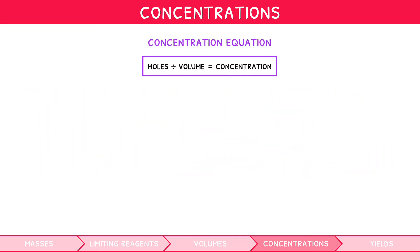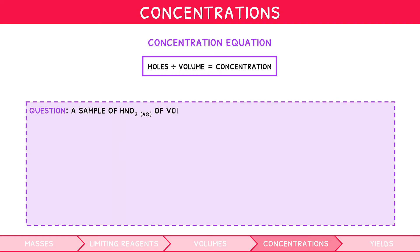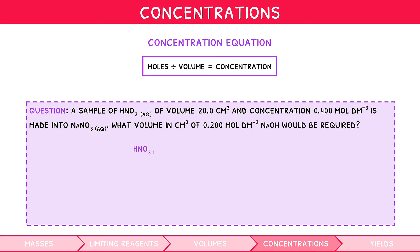Let's now look at a slightly more advanced question. A sample of nitric acid of volume 20 cm cubed and concentration 0.4 mole per decimetre cubed is made into sodium nitrate. What volume in cm cubed of 0.2 mole per decimetre cubed sodium hydroxide would be required? First, we start by writing a balanced equation and making sure to convert cm cubed to decimetres cubed. The moles of HNO3 would be 0.02 times 0.4, which is 0.008. Since nitric acid and sodium hydroxide react in a 1 to 1 ratio, the moles of sodium hydroxide is also 0.008. We can then find the volume in decimetres cubed as moles divided by concentration, which is 0.04. Converting this to centimetres cubed then gives 40 centimetres cubed.